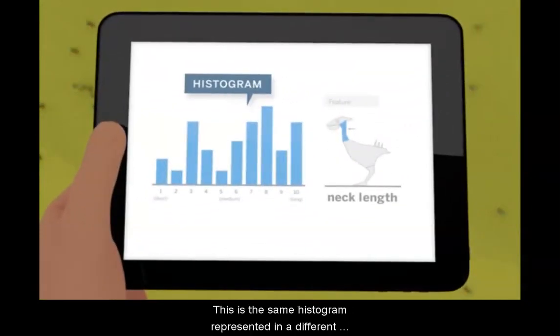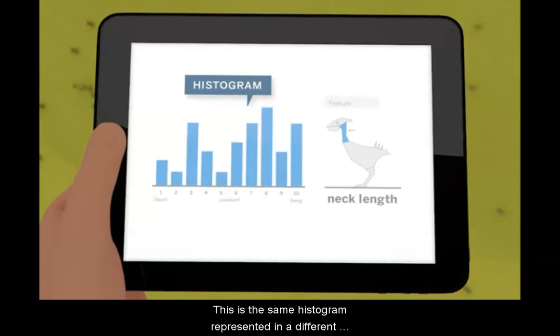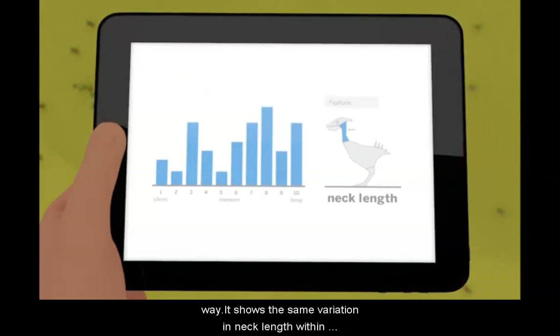This is the same histogram represented in a different way. It shows the same variation in neck length within the ostrilope population.